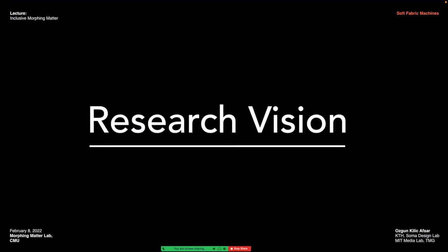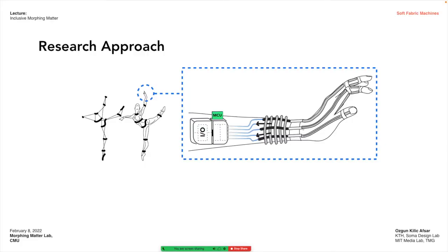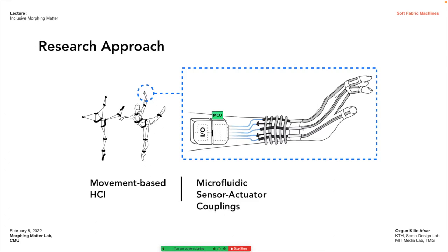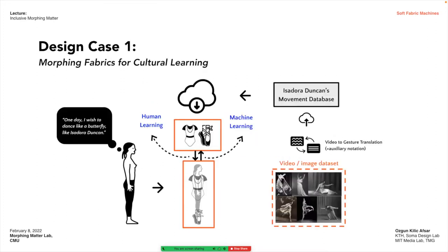My research in this area of using fabrics as soft machines lies at the intersection of multiple paradigms in the human-computer interaction field: movement-based interaction design, micro-mechanical transducers as in haptic sensor-actuators embedded into fibers and fabrics, driven by microfluidics to construct radically morphing fabric interfaces — all with the aim to build a closed-loop feedback between the fabric interface and the body, where both can change and learn from one another.